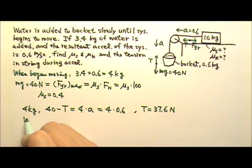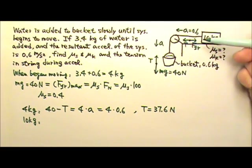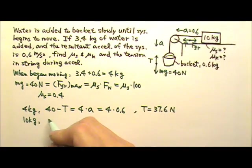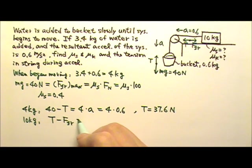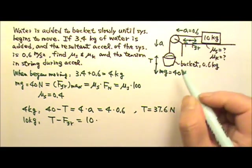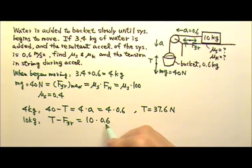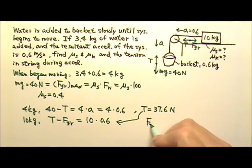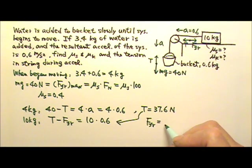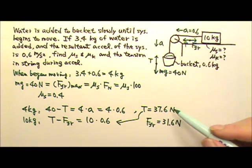For the 10 kg, we have acceleration to the left, so the leftward tension is bigger. So T minus friction equals M times A. And all we have to do is plug in the tension, and we will get the friction. So the friction is 31.6 N. But we're not looking for friction, we are looking for tension. So here's the tension.